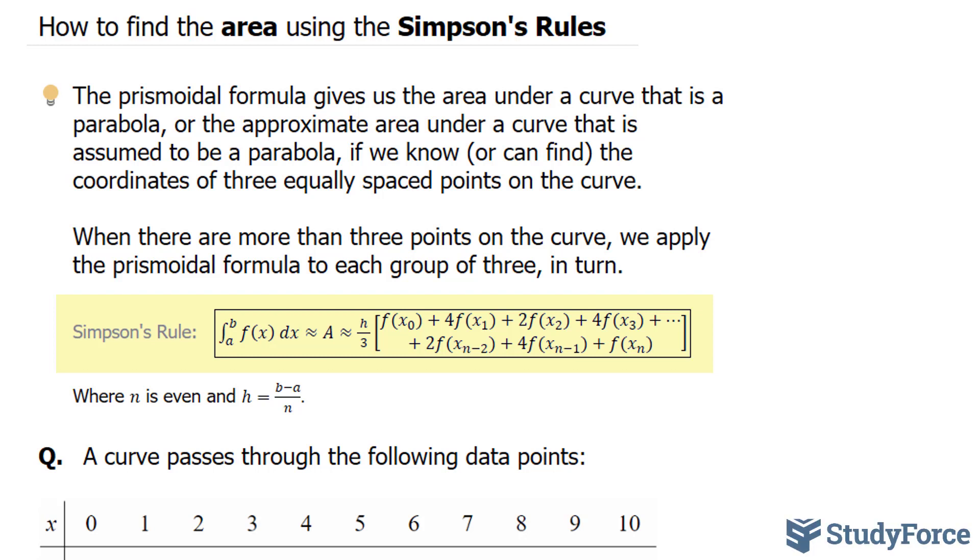The formula is summarized below, where the area of a function between bounds a and b is equal to approximately h over 3, where h represents - and this is the complicated part -